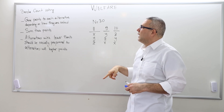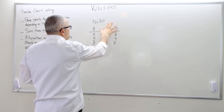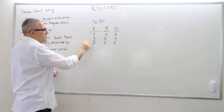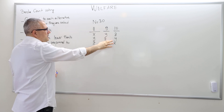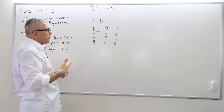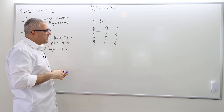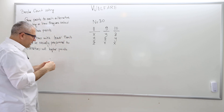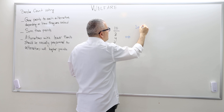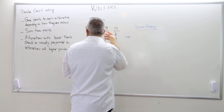Here I have the same example I used in the previous video. We have 30 voters: 11 of them rank X, Y, Z; 9 rank Y, Z, X; and the rest rank the three alternatives differently. We have three alternatives X, Y, and Z.